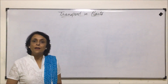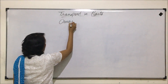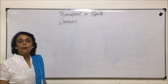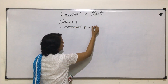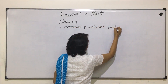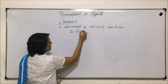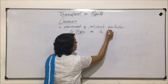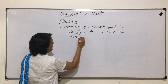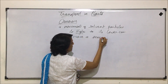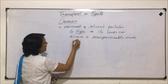In this section, we are talking of another passive process of transport, that is osmosis. In osmosis, it is the movement of solvent particles from the region of its higher concentration to its lower concentration, across a semi-permeable membrane until it reaches equilibrium.